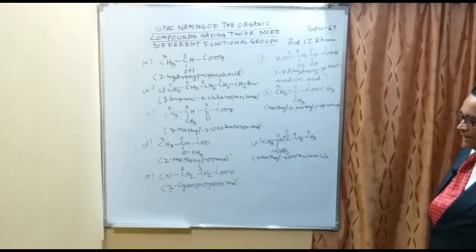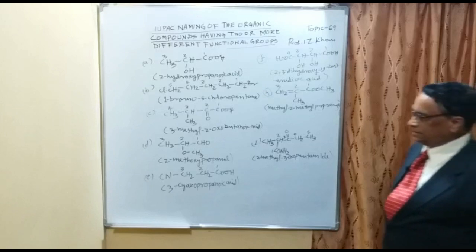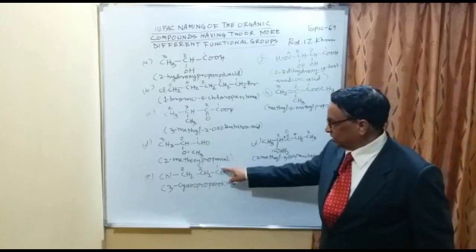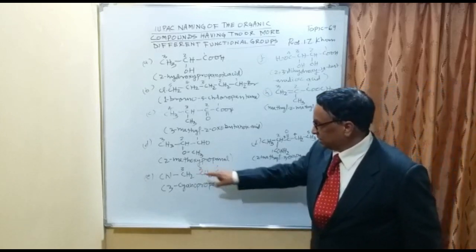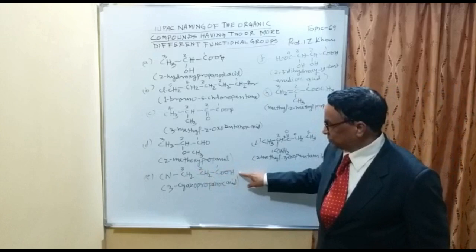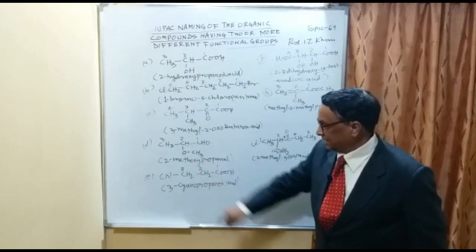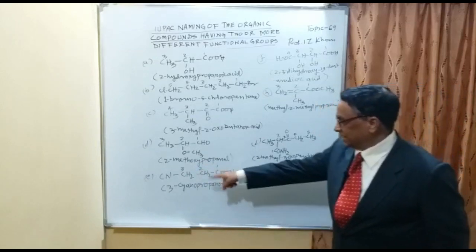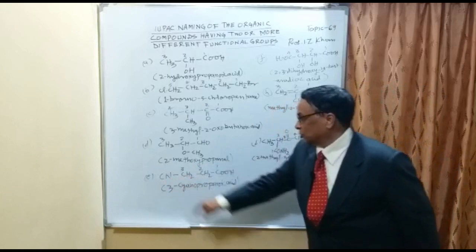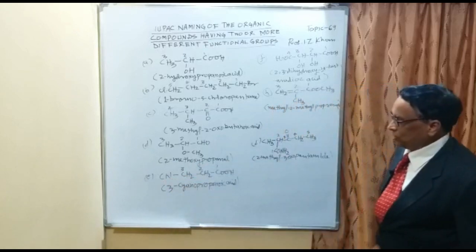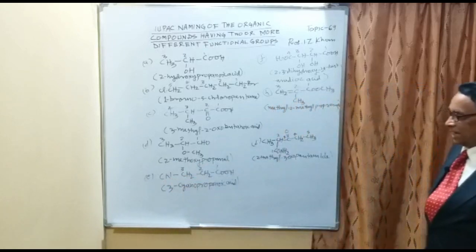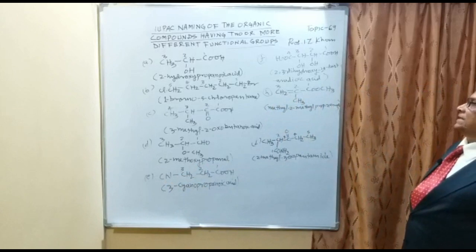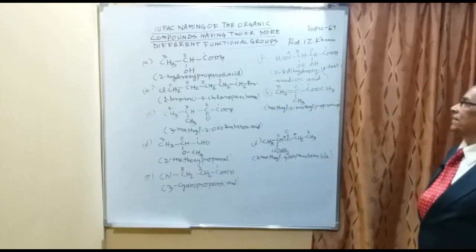Example E has two functional groups: a COOH (carboxylic acid) and a CN (nitrile). With 3 carbons numbered 1 through 3, and the cyano group at carbon 3, the name is 3-cyanopropanoic acid.